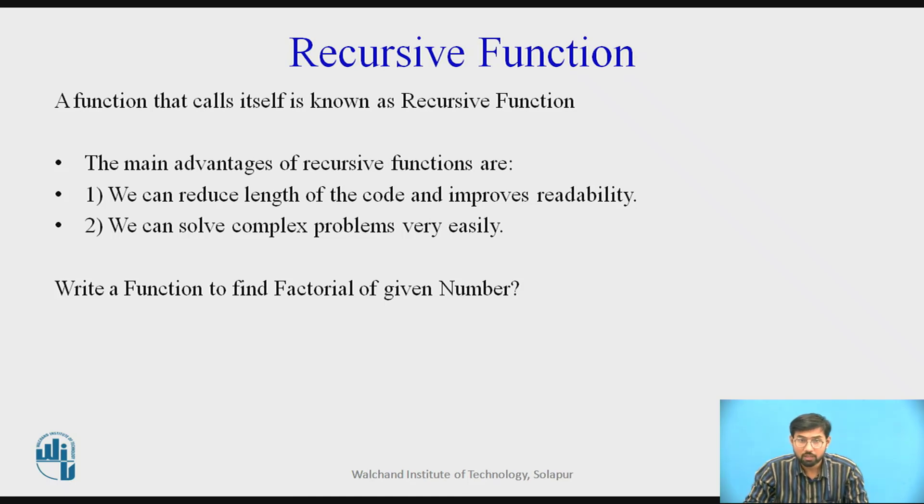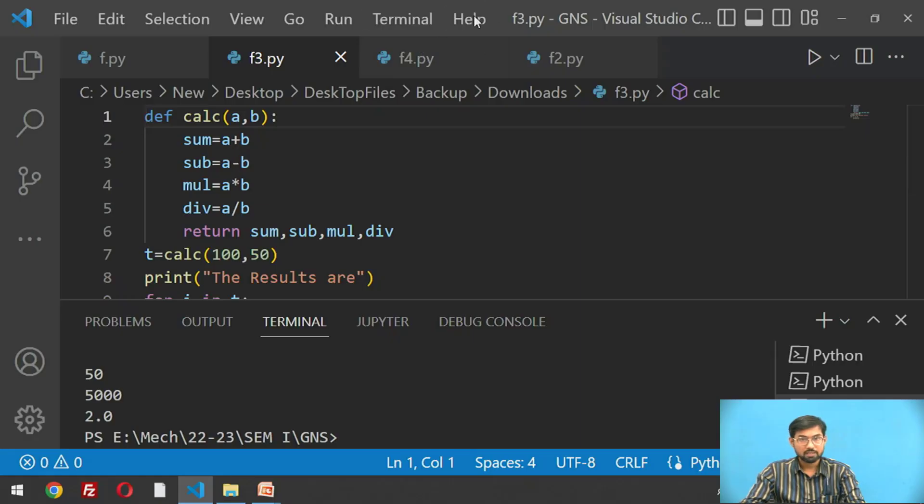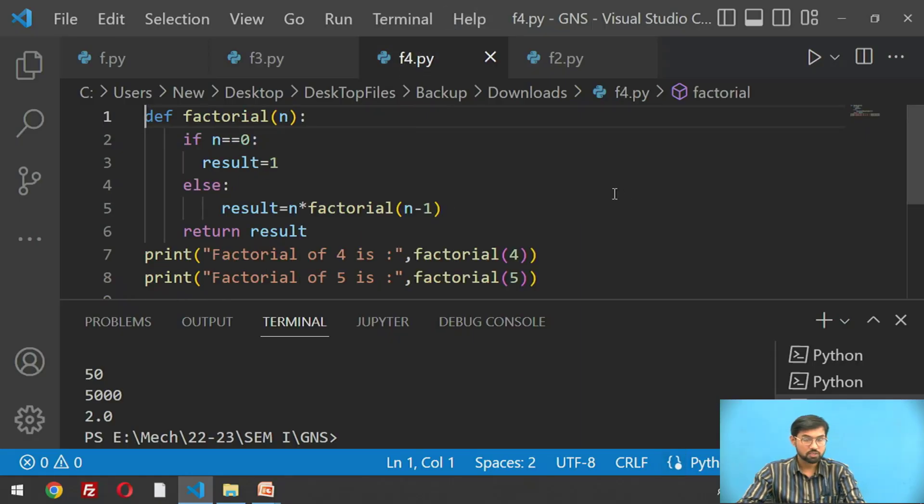Now we are going to learn the next part of function, that is recursive function. A function that calls itself is known as recursive function. The main advantages are: we can reduce the length of code and improve readability, we can solve complex problems very easily. We write a function to find the factorial of a given number.